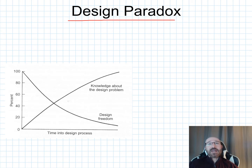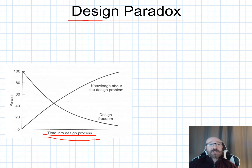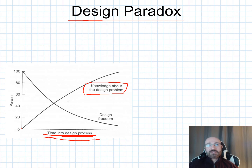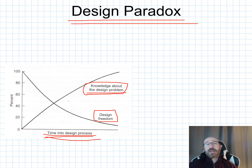This leads us into the design paradox. As you put more time into the design process, you gain more knowledge about the design problem. Inversely, you start with a lot of design freedom when brainstorming conceptual ideas, but the more time you spend, the more you realize those freedoms are limited by regulations and other constraints. Design freedoms decrease as knowledge about the design problem increases — that's the design paradox.